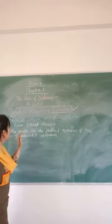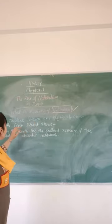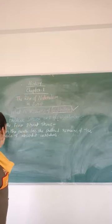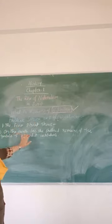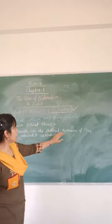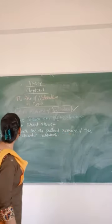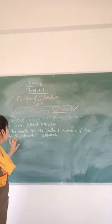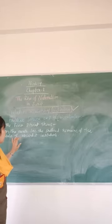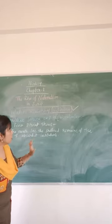The second visualization of Frederic Sorrieu: on the earth lie the shattered remains of the symbols of absolute institutions.